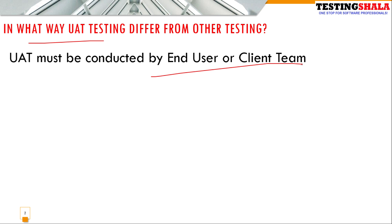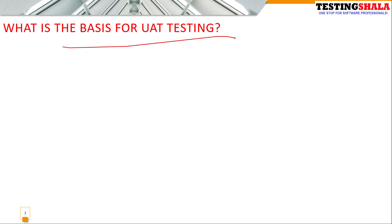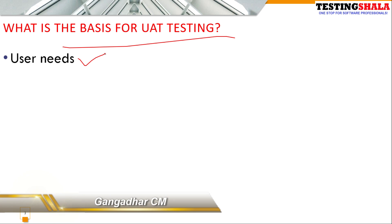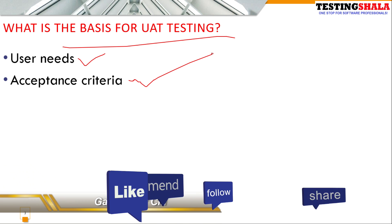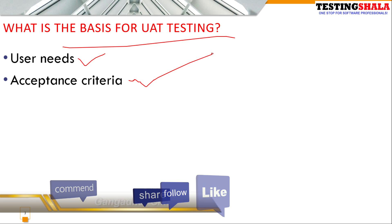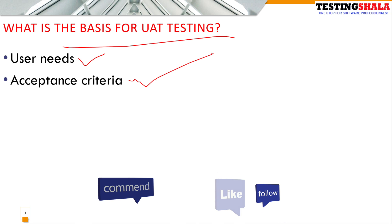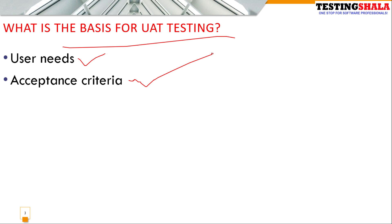The second question is: what is the basis for UAT testing? There are three important bases. First is user needs — we concentrate on end user needs, end user expectations, and end user experience. Second is acceptance criteria — when the project is handed over for implementation, we define acceptance criteria that needs to be met during UAT testing. Third is business processes — UAT testing is purely done based on how the end user is going to use the application.